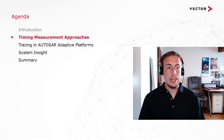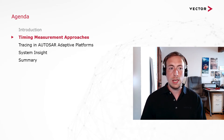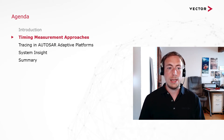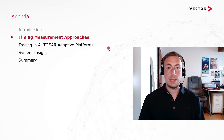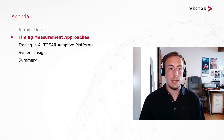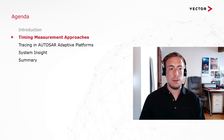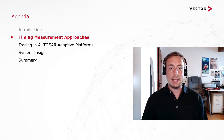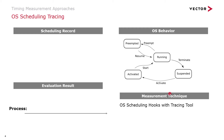Looking at the agenda: in the next chapter we will examine two kinds of measurement approaches, highlighting one in particular to answer those questions. Afterwards I will highlight a technique in its own chapter called Tracing in AUTOSAR Adaptive Platforms. The last chapter gives insight into how those questions can be answered, including by a tool, and finally we will summarize the timing measurement approaches.